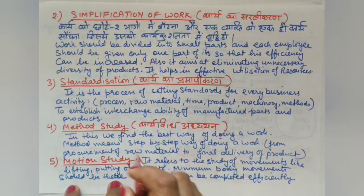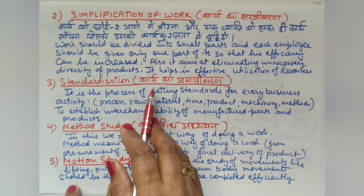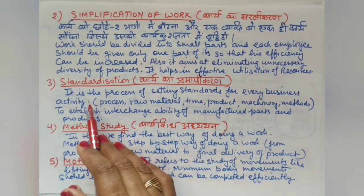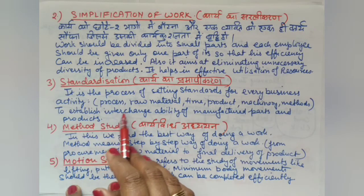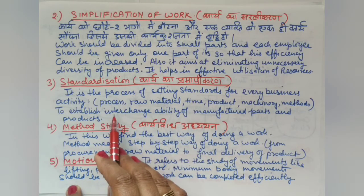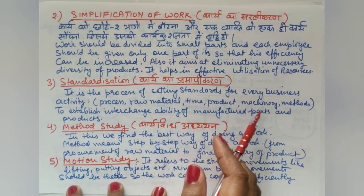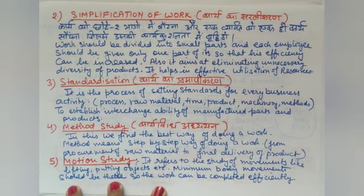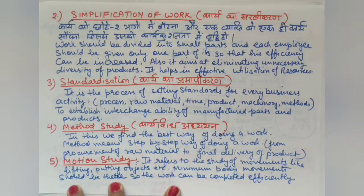The third technique is Standardization. Standardization is the process of setting standards for every business activity — whether process, raw materials, time, product, machines, or methods. Standards must be set scientifically for every aspect of the business. This leads to homogeneous product production and ensures efficiency across all activities.